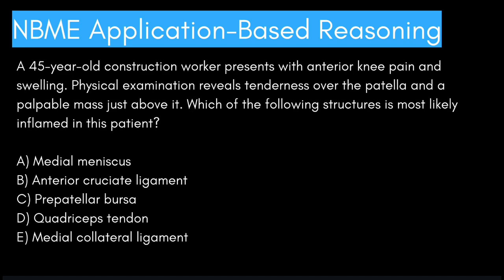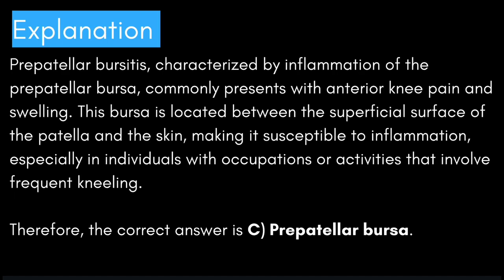All right, I think I gave you guys enough time. Moving on — prepatellar bursitis, characterized by inflammation of the prepatellar bursa, commonly presents with anterior knee pain and swelling. This bursa is located between the superficial surface of the patella and the skin, making it susceptible to inflammation, especially in individuals with occupations or activities that involve frequent kneeling. Therefore, the correct answer is C: prepatellar bursa.